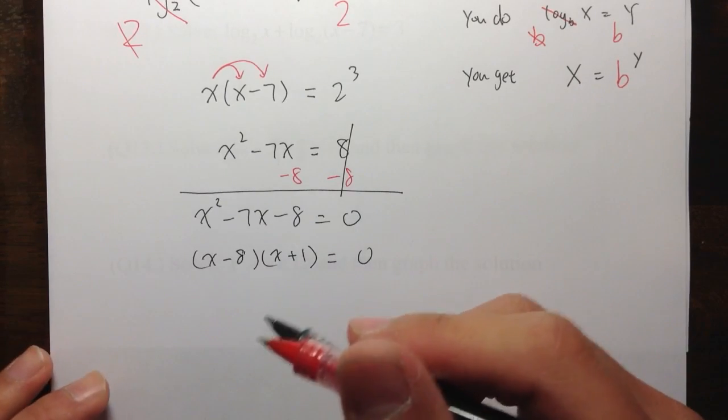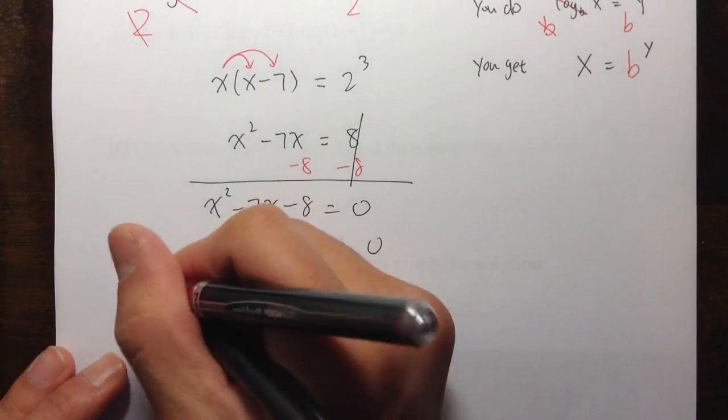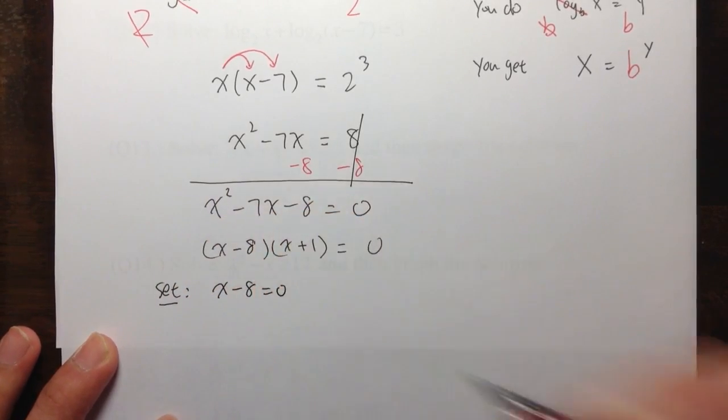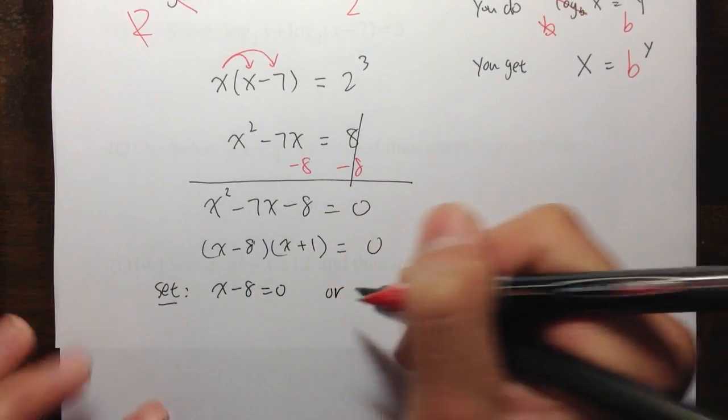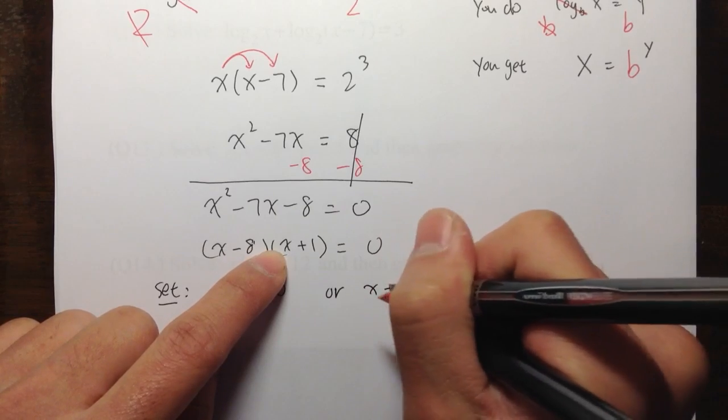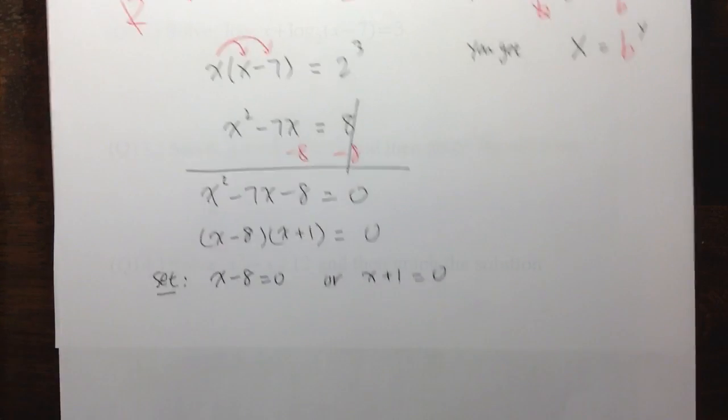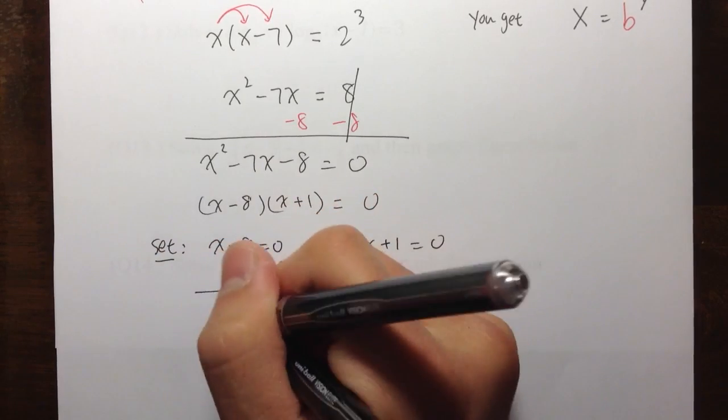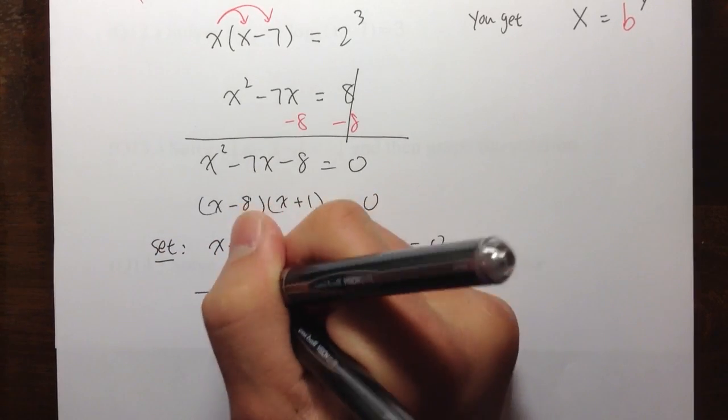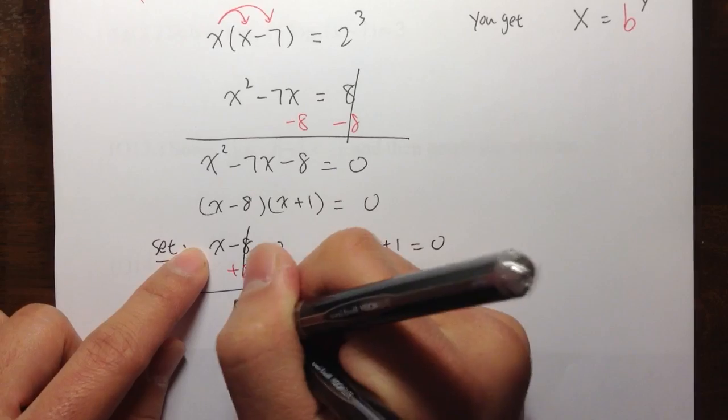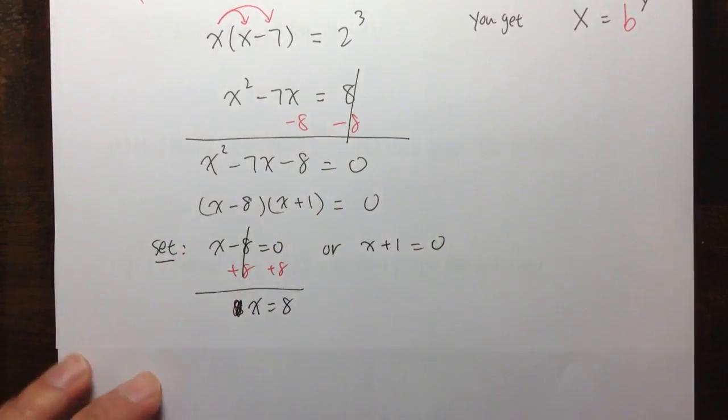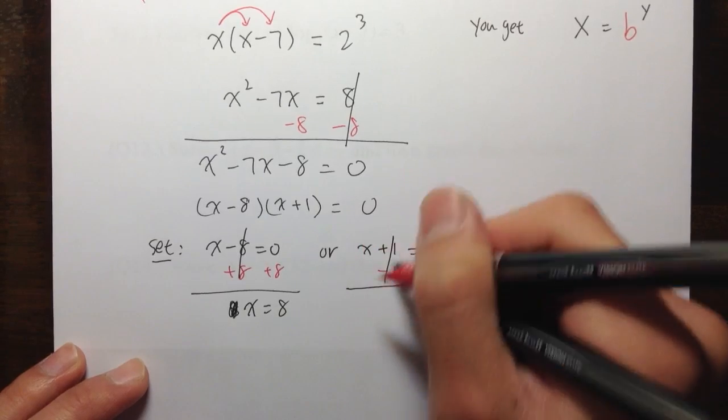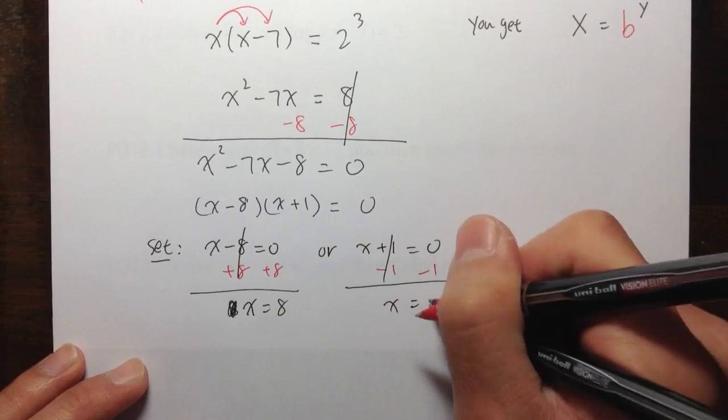Then, we're going to set each factor to 0. So I will say, set the first factor, which is X minus 8, is equal to 0. Or, the second factor, X plus 1, is equal to 0. For the first one, we just add 8 on both sides. You get X is equal to positive 8. And right here, subtract 1. You get X is equal to negative 1.